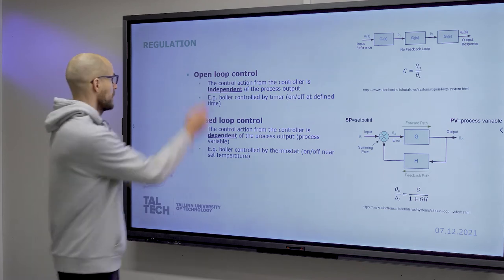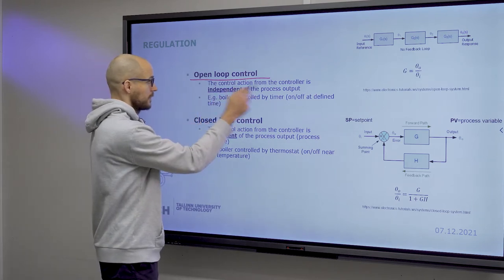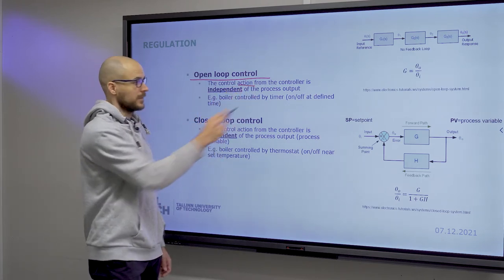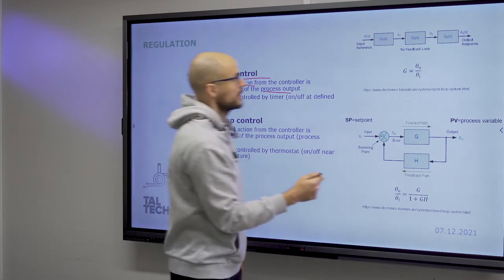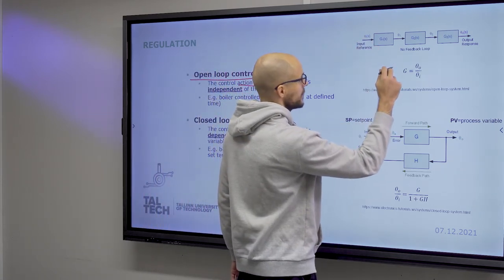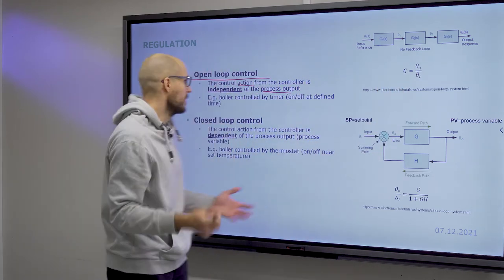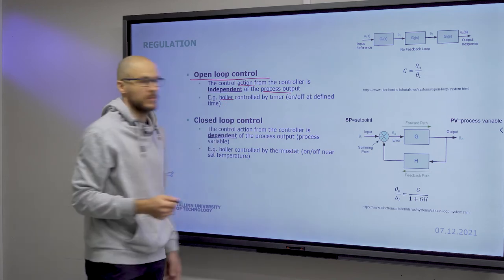First, open loop control means that the control action is independent of the process output. What that means is, if you have a process that you want to control, like let's say a boiler. That's actually the example I have here.